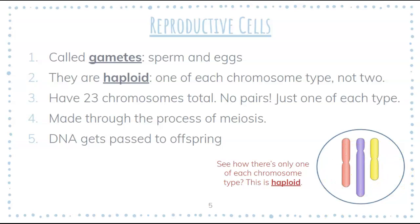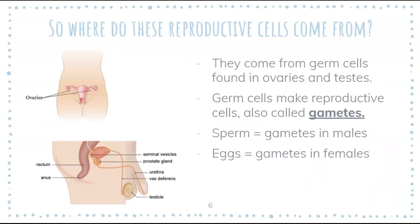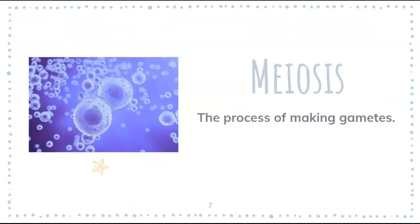These reproductive cells are made through a different process called meiosis, and this is the DNA that gets passed on to our offspring — to our children. So where do they come from? They come from a specialized cell called a germ cell. In women, germ cells are found in ovaries, and in males, germ cells are found in testes. The germ cells are what make our gametes — special cells in the ovaries that make eggs, and special cells in the testes that make sperm.